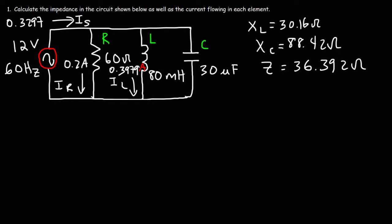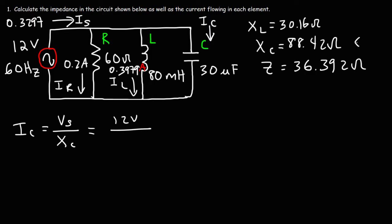There's one more current to calculate: the current flowing through the capacitor, IC. That's VS over the capacitive reactance, and the capacitive reactance is 88.42 ohms. So we get IC = 0.1357 amps. Now we have the current flowing through each element in the circuit — through the resistor, the inductor, and the capacitor.